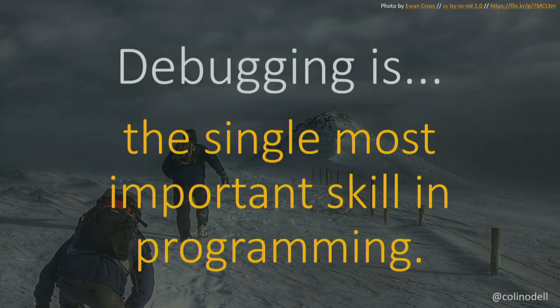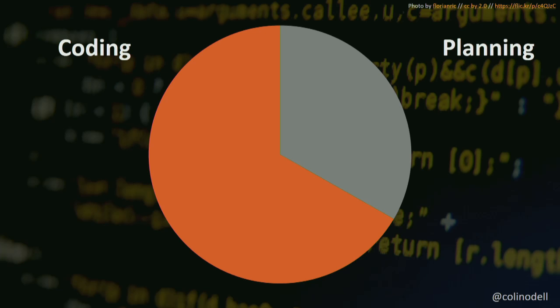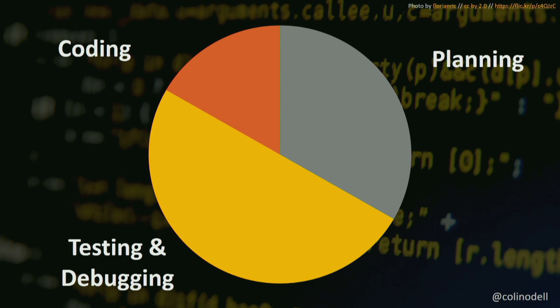I'd argue that debugging is the single most important skill in programming. Why? Think about how much time developers actually spend on different activities. You might assume a third of your time is planning — meetings, triaging tickets, Slack, email — and the other two-thirds coding new features. But according to The Mythical Man-Month, we actually spend up to half our time testing and debugging, and only one-sixth actually implementing new code. So becoming efficient at debugging makes a huge difference.